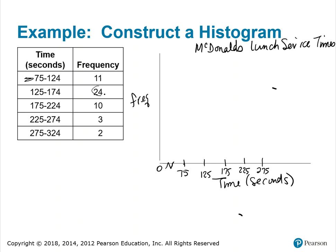My maximum frequency is 24, so if I count by fives — 5, 10, 15, 20, 25 — I'll have enough vertical height to draw my bars.